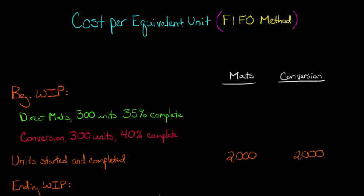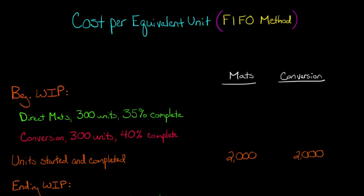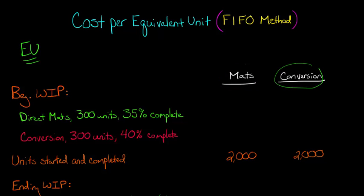In this video, we're going to talk about how to calculate the cost per equivalent unit using the FIFO method. The first thing we need to know is the number of equivalent units of production, which I'll abbreviate as EU. We're going to be calculating this for direct materials, abbreviated as MATS, and also for our conversion costs.